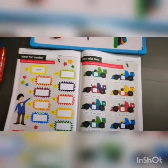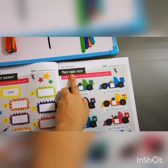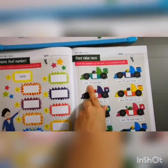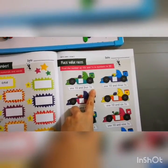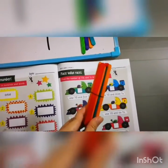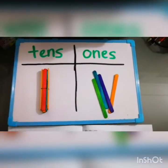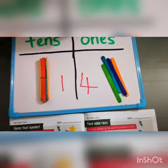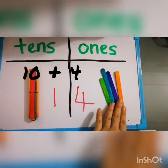Now take out your activity book and turn to page 39, right next to the page you were doing just now. Remember to write the date up here. Place value races — find the number of tens and ones in numbers to 20. Let's look at the first race car. It says 1 ten and 4 ones. Let's use the popsicle sticks. We have 1 bundle and 4 single popsicle sticks. Together that makes 14, because 10 plus 4 makes 14.